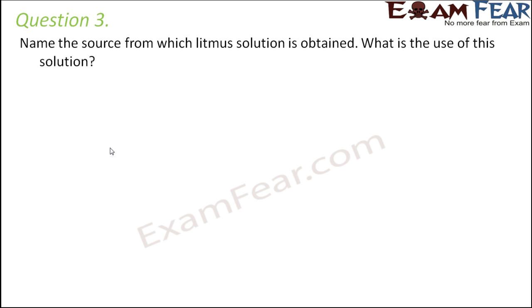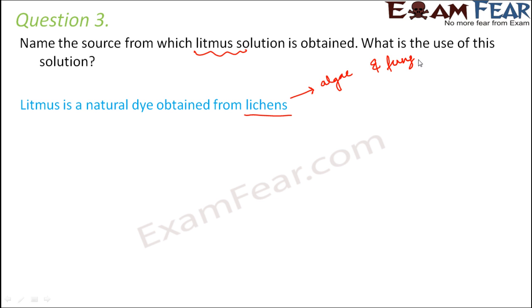Question number three, name the source from which litmus solution is obtained. What is the use of this solution? So litmus is a natural dye which is obtained from the lichens. And lichens are found on the bark of trees and they are a symbiotic association between algae and fungi. In this association, both algae and fungi are mutually benefited.